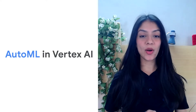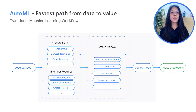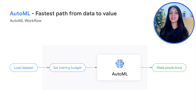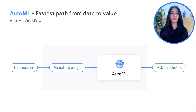Now let's understand AutoML in a little more detail. In a traditional ML workflow, you load your dataset, pre-process it, do feature engineering, build your ML model, deploy it, and it makes predictions. With AutoML, we help you skip a major chunk of this process using pre-built models. You simply load your data, set your training budget, and AutoML takes care of the rest — choosing the best fit model and giving you predictions — entirely skipping model architecture selection, building, and parameter tuning. This is essentially the fastest path from data to value.